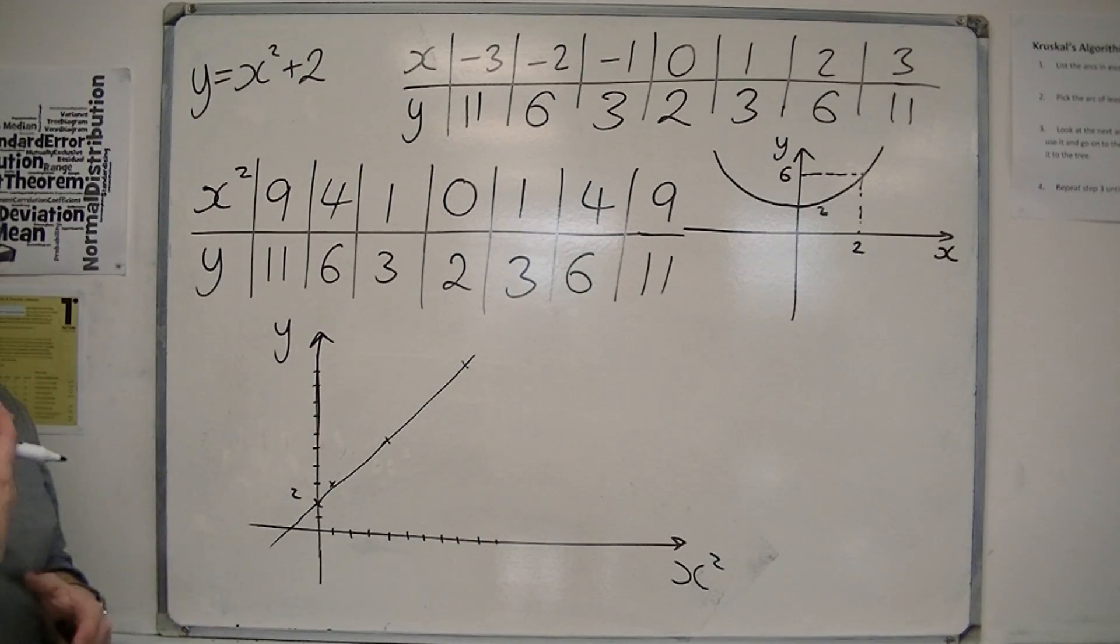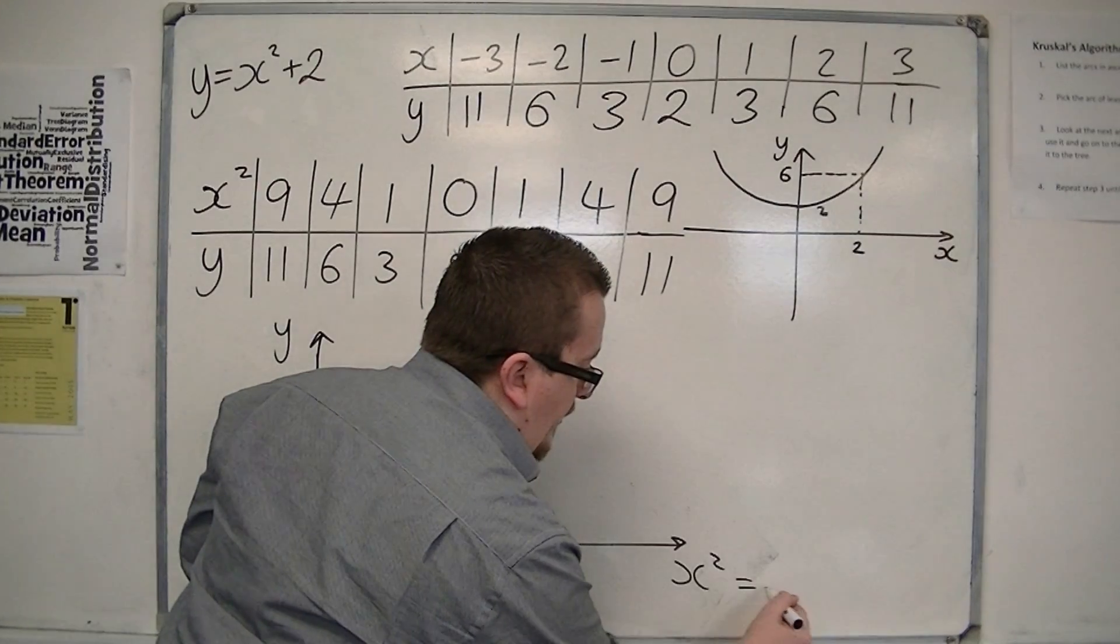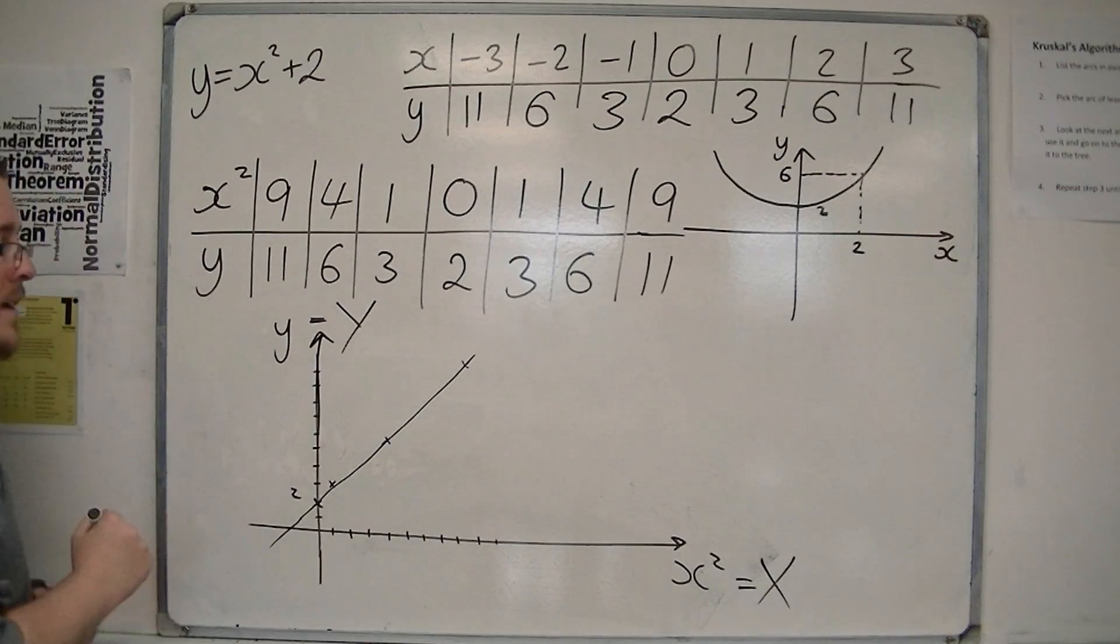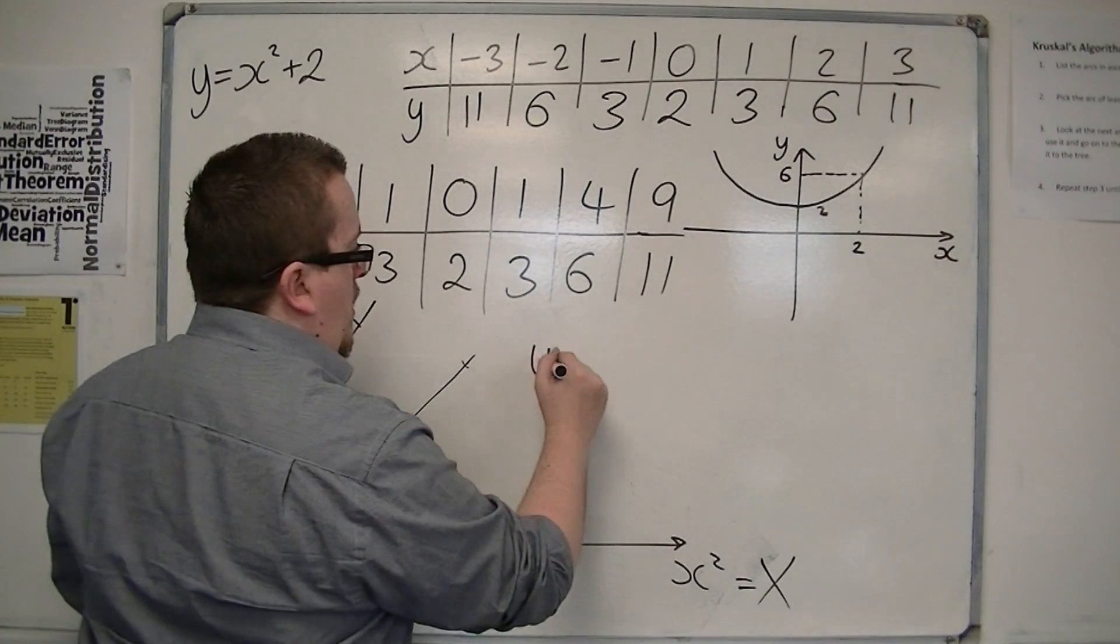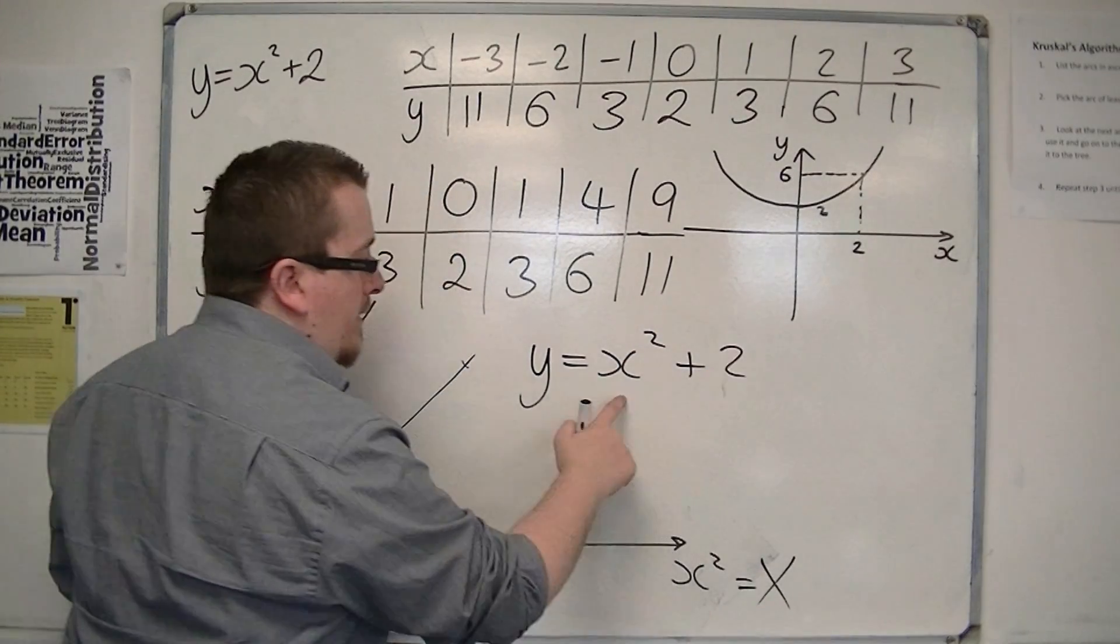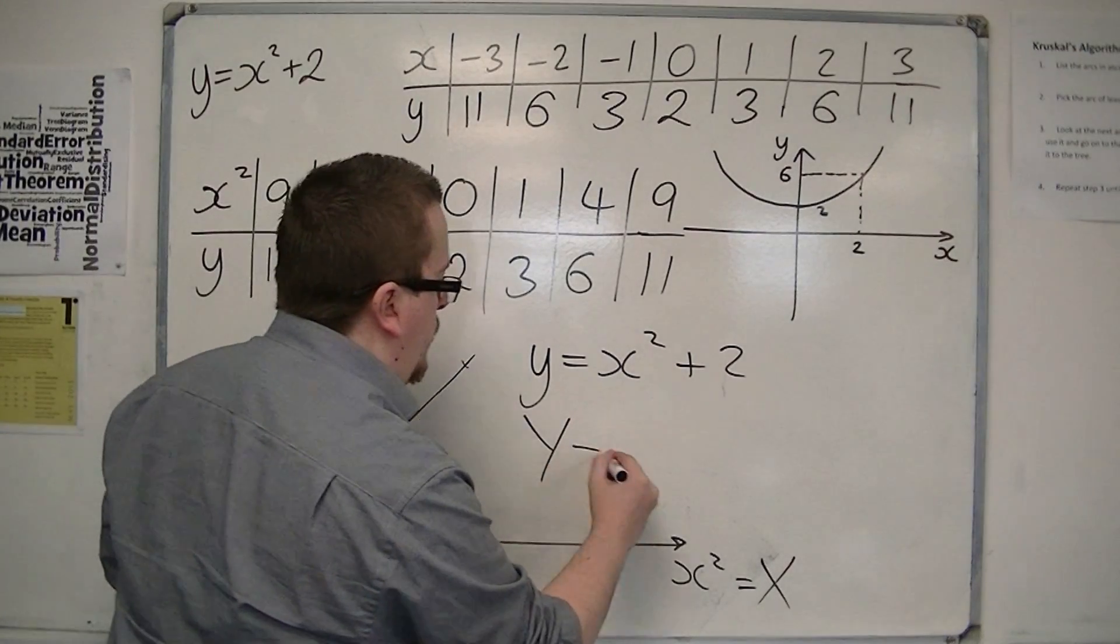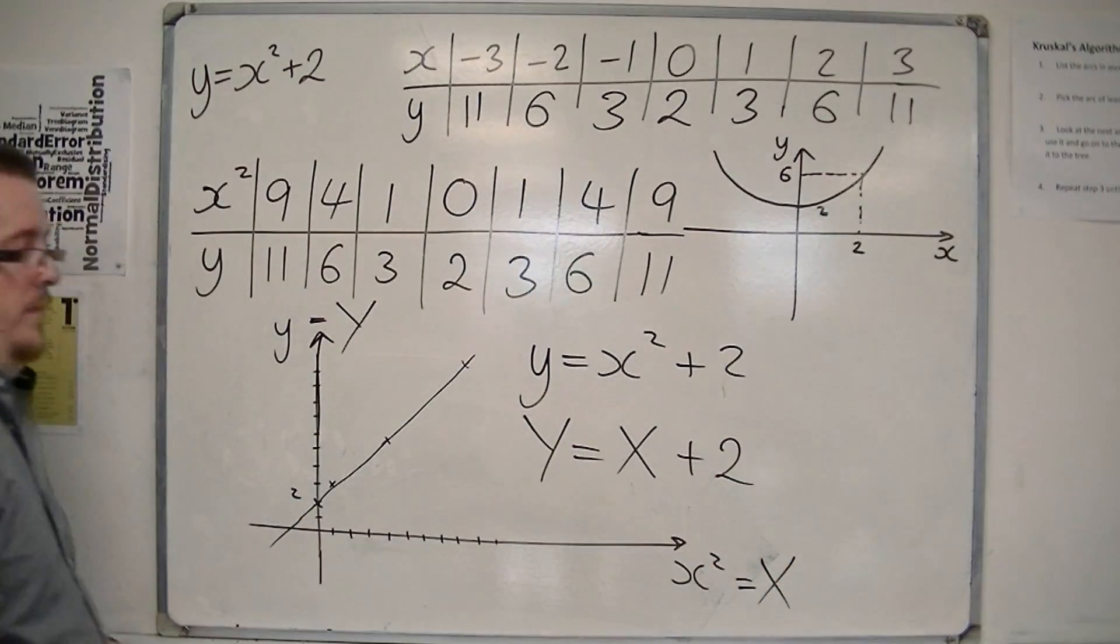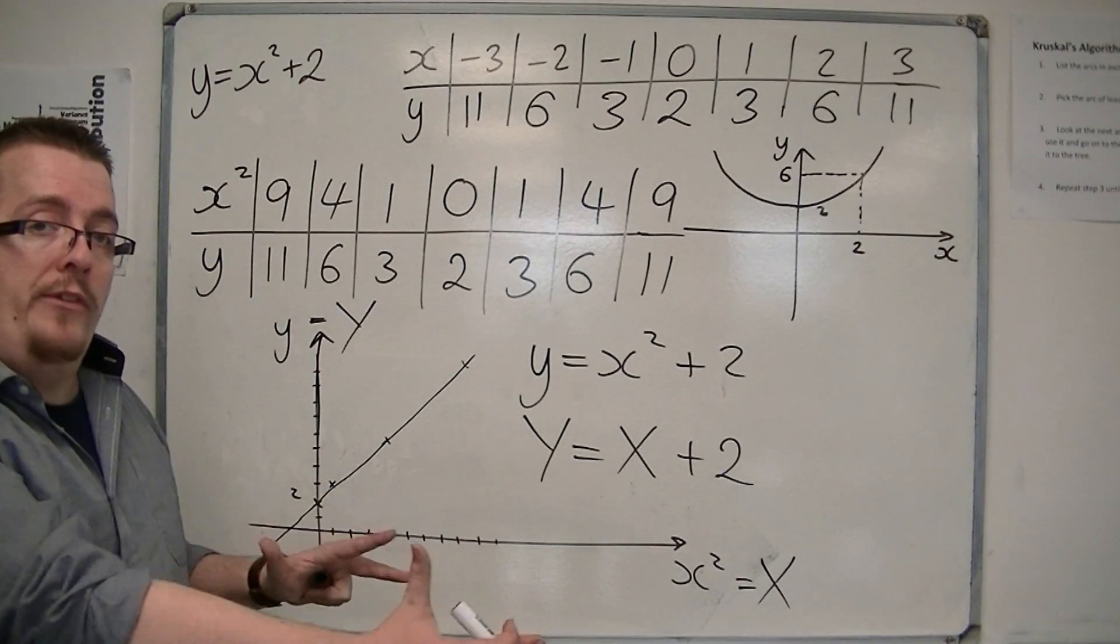Now, the reason why is that if I replace the x squared with capital X, and I replace the y with capital Y, then the equation of this line, rather than being y equals x squared plus 2 with lowercase x and y, it's now capital Y equals capital X plus 2. So this is of the form y equals mx plus c.